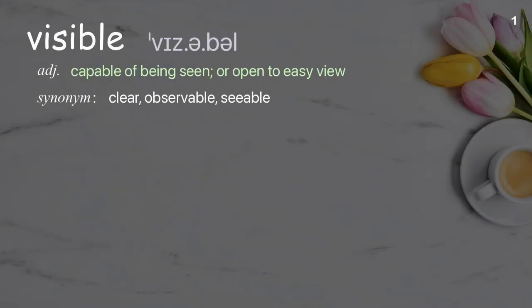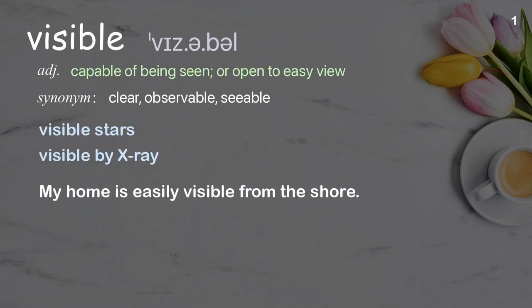Visible: capable of being seen or open to easy view. Examples: visible stars, visible by x-ray. My home is easily visible from the shore.